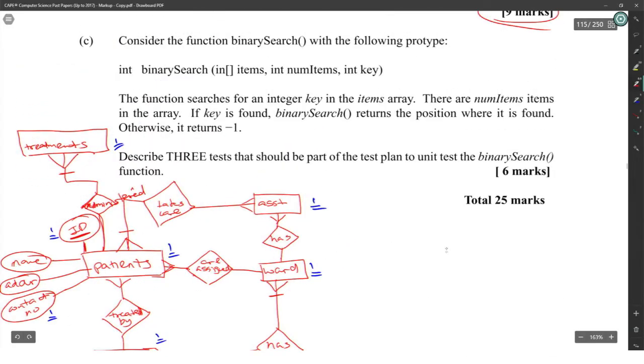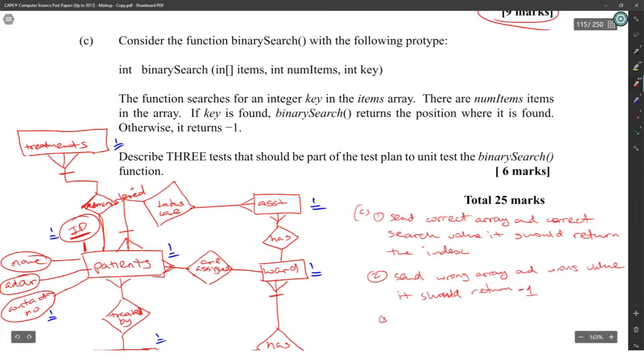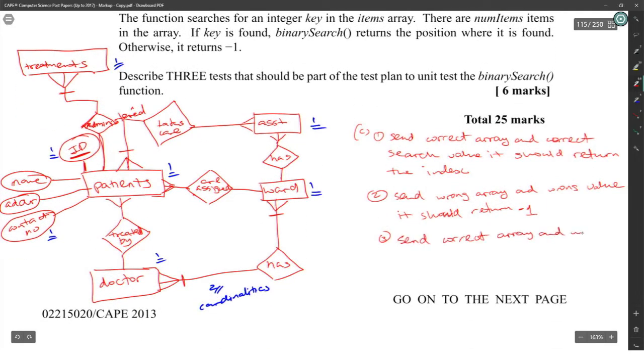Describe three tests for binary search. This is an easy question. Test number one: send correct array and correct search value, it should return the index. Two: send correct array and wrong value, it should return minus one. Three: send empty array and valid value. If you send an empty array and a valid value, that should be good enough there.